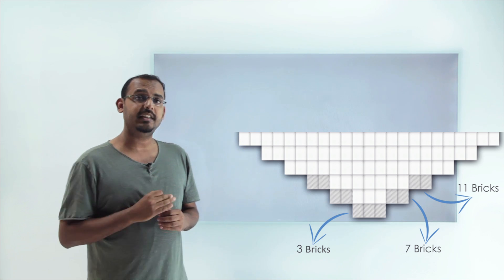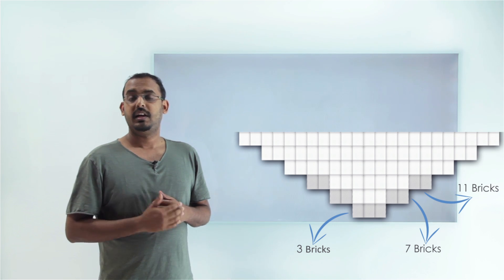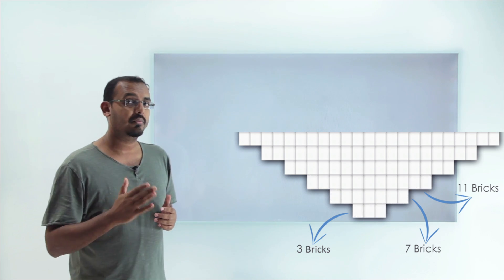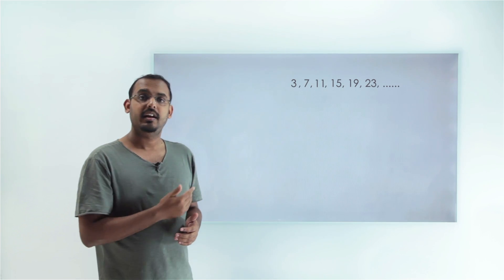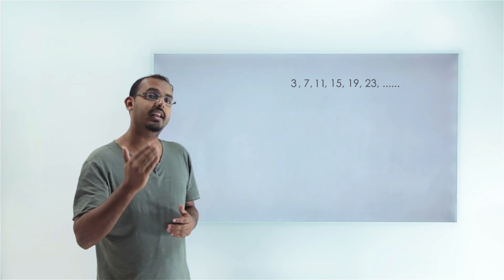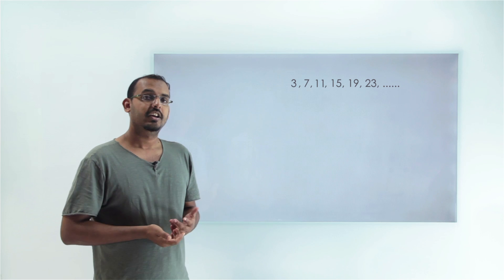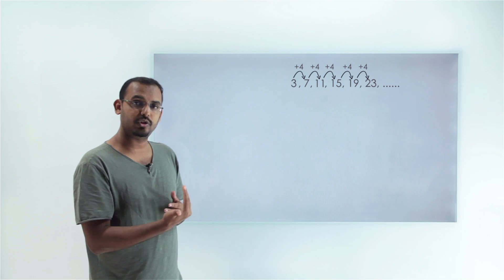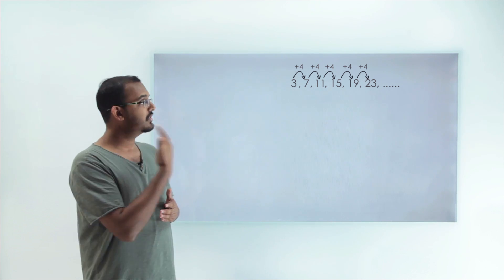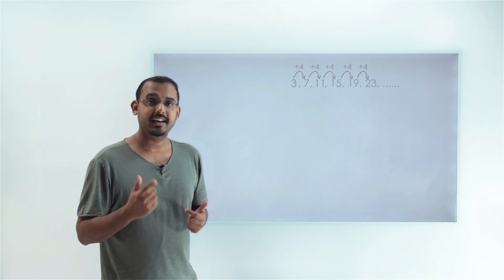If we try to represent this pattern in terms of numbers, what number sequence do we get? We get 3, 7, 11, 15, 19 — where 3 is the number of bricks in the first layer, 7 in the second, and so on. In this number sequence, the pattern is that the next number is always 4 more than the previous one. There is a difference of 4 between all subsequent terms of this number pattern. You can visualize a lot of number patterns this way.